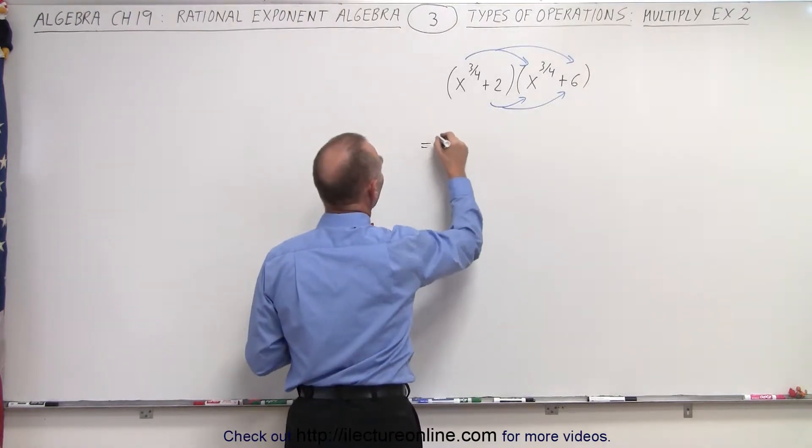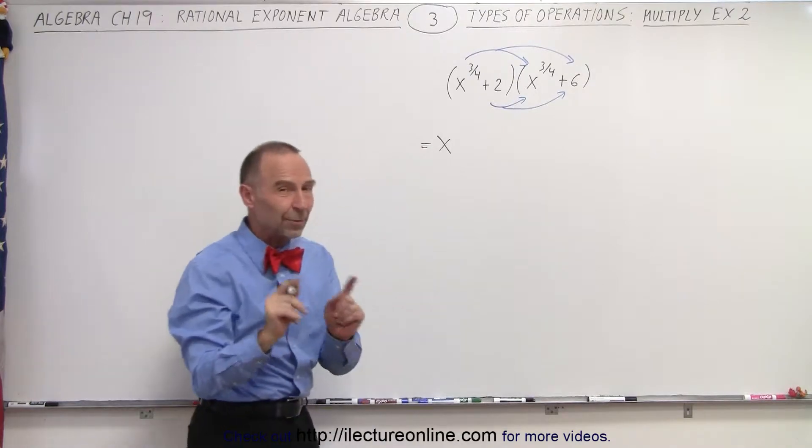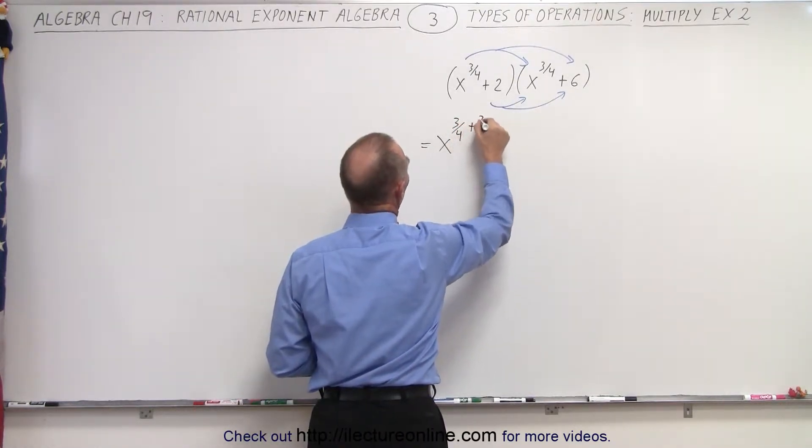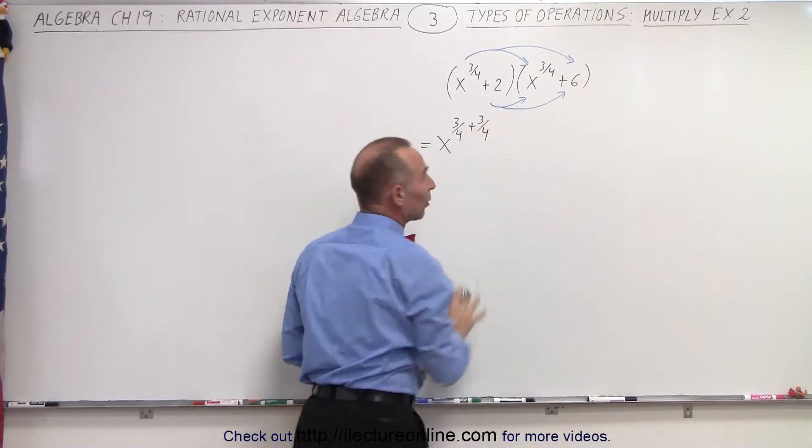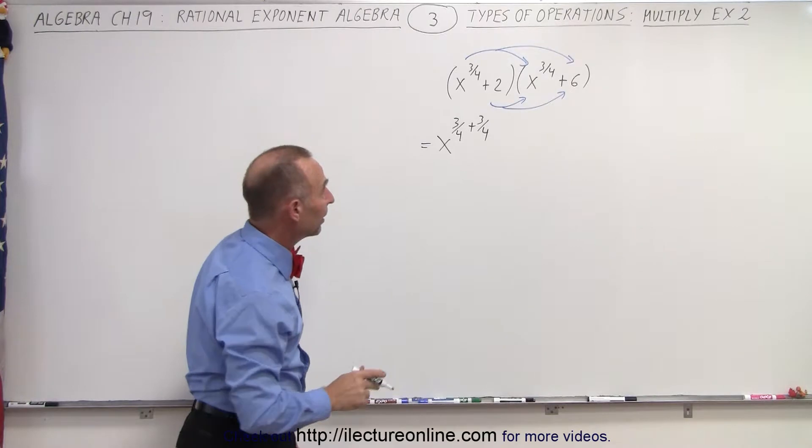So this becomes equal to x to the 3 quarters times x to the 3 quarters. Remember, when the bases are the same, we add exponents, so simply write 3 quarters plus 3 quarters. If you can do it all at once, that's great, but it's not a bad idea to go ahead and do that intermediate step.